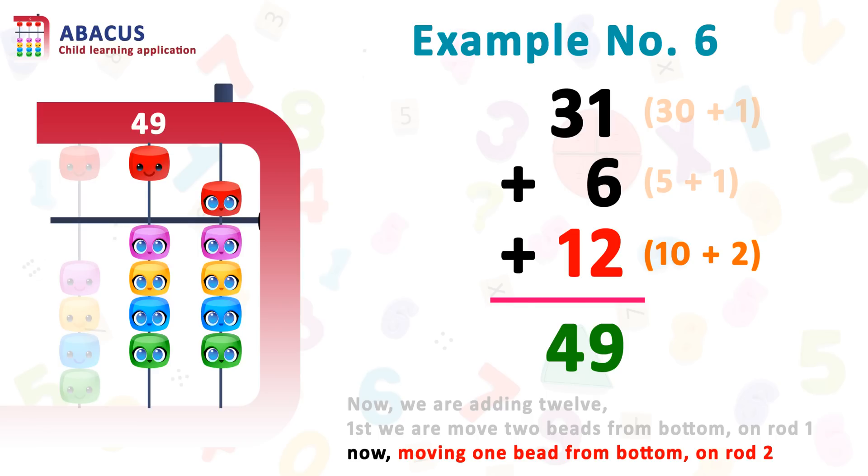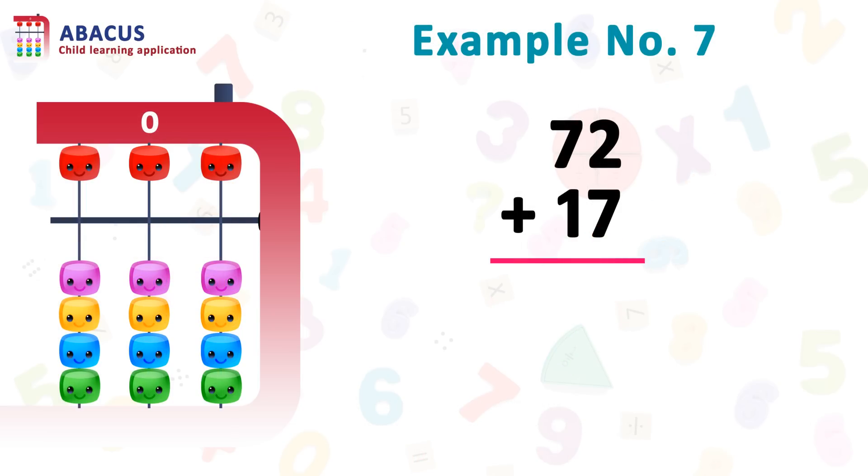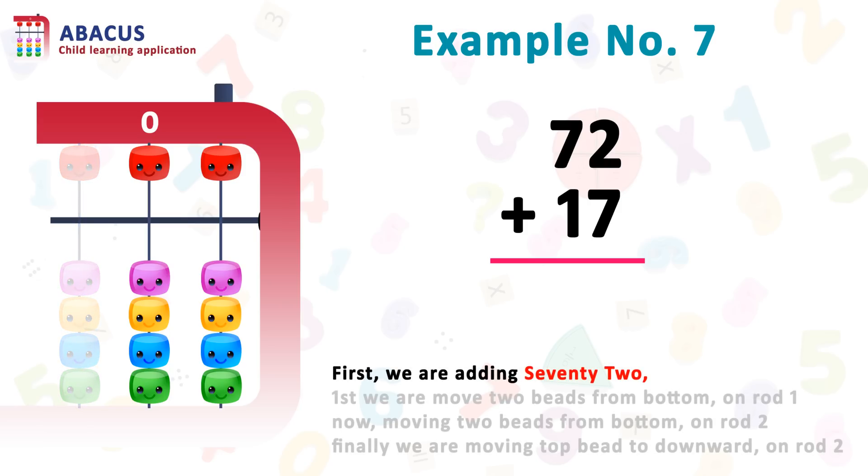Let's see one more example. So reset and continue. Here, example number 7: 72 plus 17. So here, first we are adding 72. Here we are adding 72 step by step.